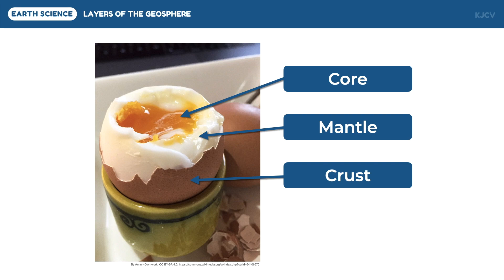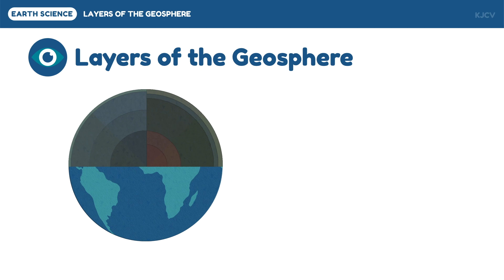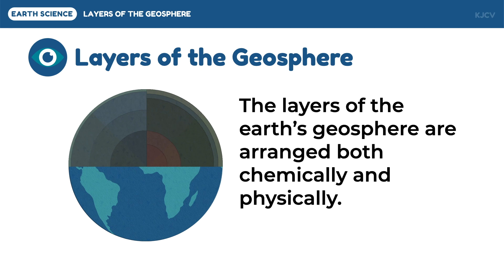However, the layers of the earth's geosphere are not limited to these three layers. As seen in the illustration, there are two ways to classify the layers of the earth's geosphere: the four layers on the left side are based on the chemical composition of the layers, and the five layers on the right side are based on the strength and physical state of the layers.